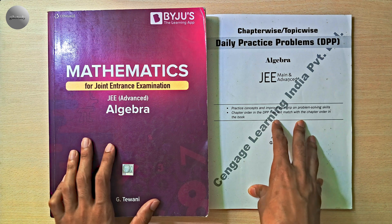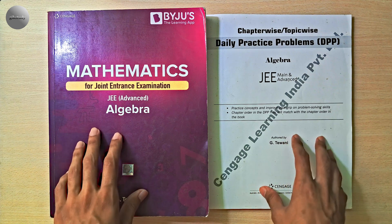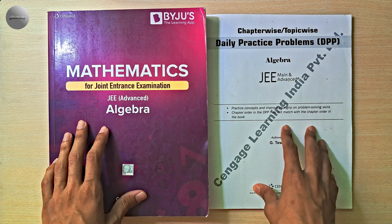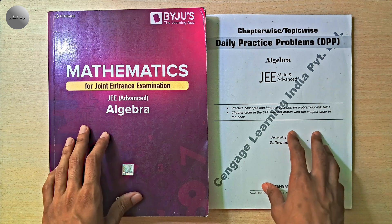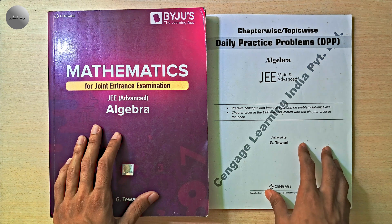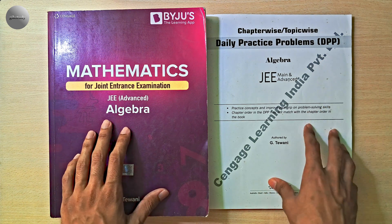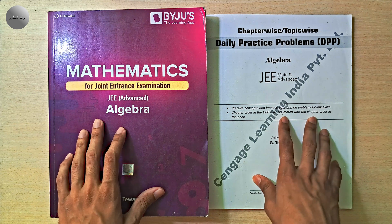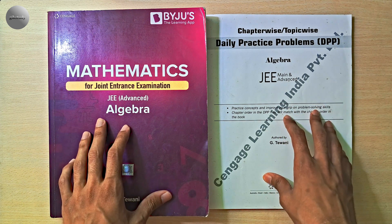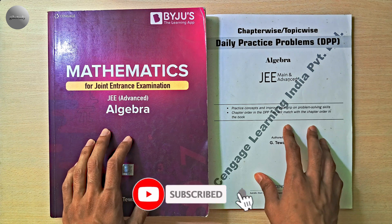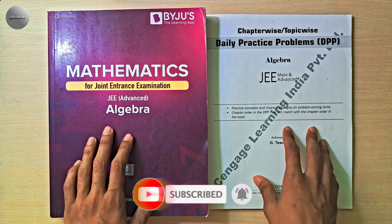So should you actually buy Cengage Algebra? Yes, if you're aiming for top ranks in JEE and already have some conceptual clarity — it's one of the best resources for algebra. But if you're a beginner or preparing without guidance, it may feel too fast, too deep, or too much. In that case, use it along with class notes, coaching modules, or a simpler foundation book first. Cengage Algebra is a complete ecosystem for theory, practice, and exam-level problems. Use it chapter by chapter, stay consistent, and don't try to rush — even solving 60 to 70 percent of the book is enough to build strong algebra fundamentals. For dedicated aspirants, it's definitely worth the hype, but only if you're ready to put in the work.